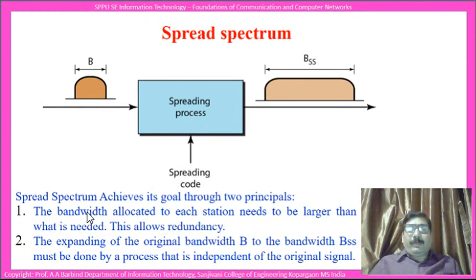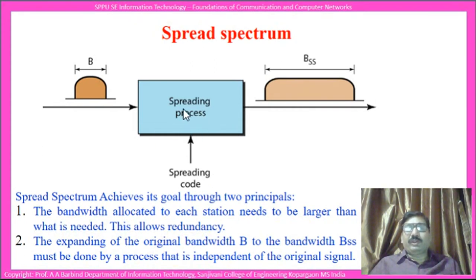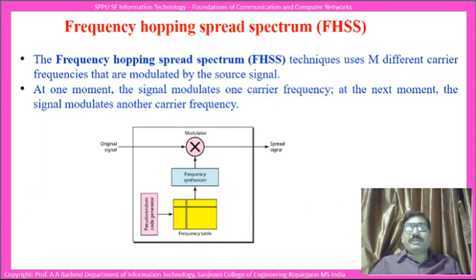The bandwidth allocated to each station needs to be larger than what is needed, and this allows for redundancy. The expanding of the original bandwidth B to the bandwidth B_ss must be done by a process that is independent of the original signal.